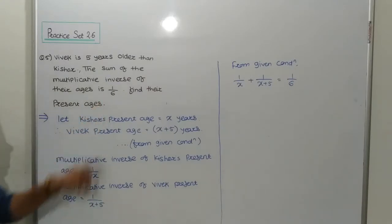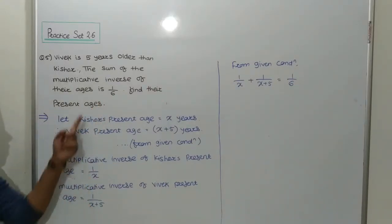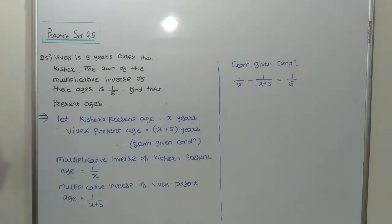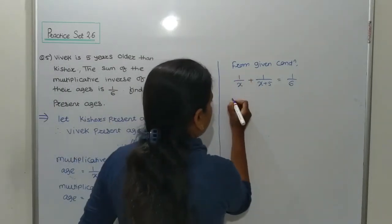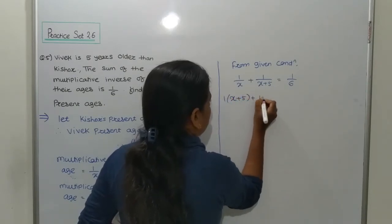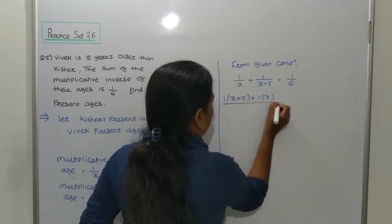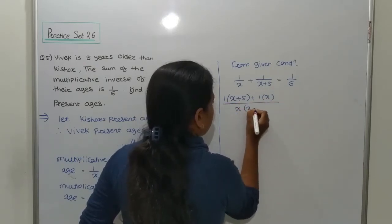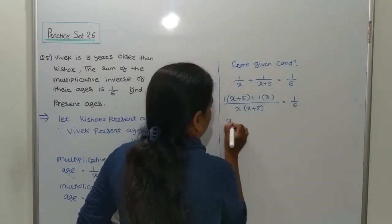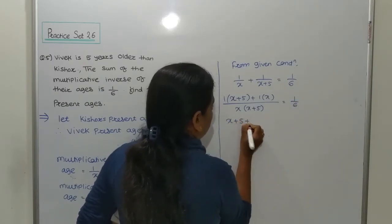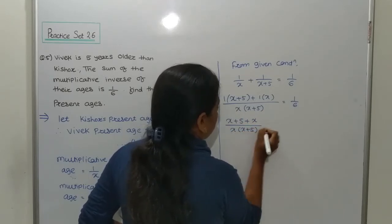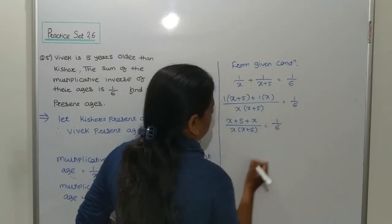From the given condition: 1 upon x plus 1 upon x plus 5 is equal to 1 upon 6. So now solve this equation — just cross multiply: 1 into (x plus 5) plus 1 into x, all upon x(x plus 5), is equal to 1 upon 6.